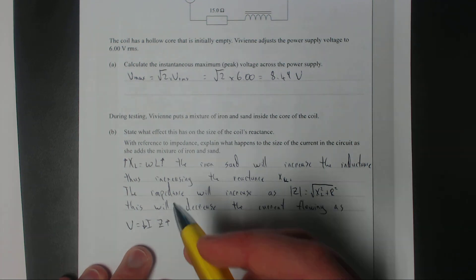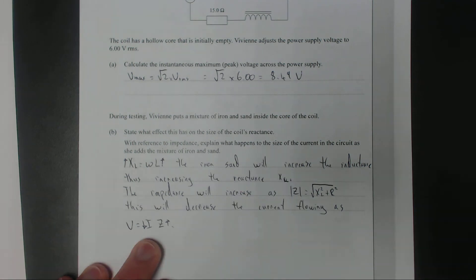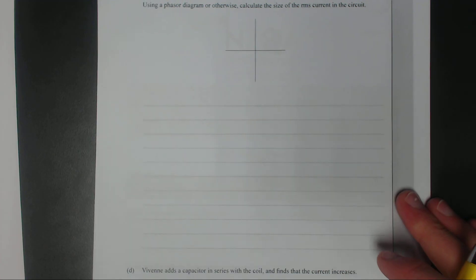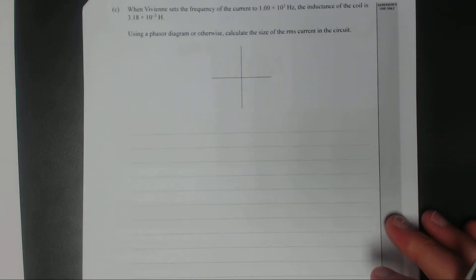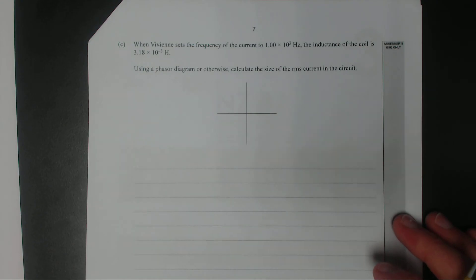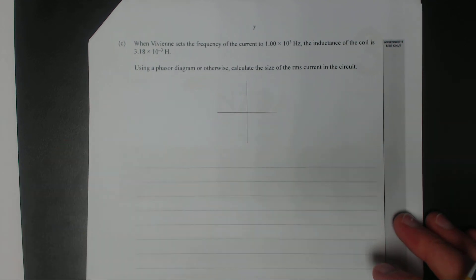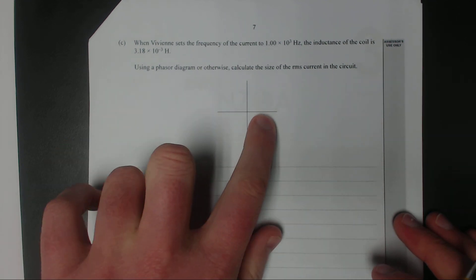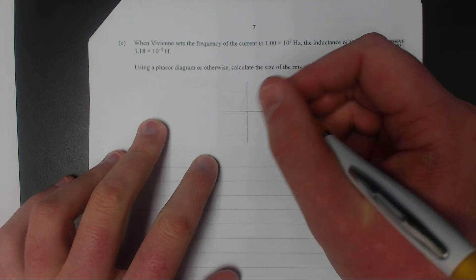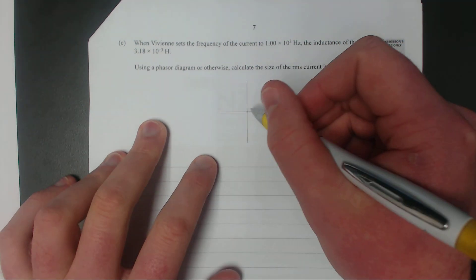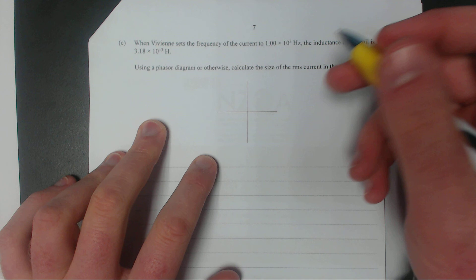When Vivian sets the frequency of the current to 1000 hertz, the inductance of the coil is 3.18 times 10 to the negative 3 henry. Use a phase diagram or otherwise calculate the size of the RMS current in the circuit. If we assume it starts like a regular Argand diagram, this is where it all leads to if you continue with electricity - you just do Argand diagrams.